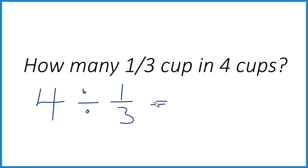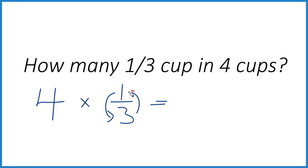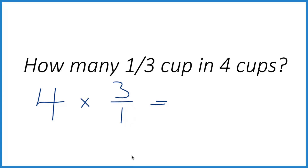With fractions, it's usually easier — instead of division, we're going to multiply. We're going to multiply by the reciprocal of one-third. To take the reciprocal, you just move the numerator down to the bottom and the denominator up to the top, like this. So the reciprocal of one-third is three.